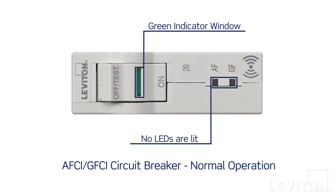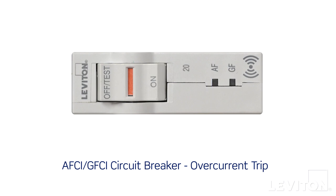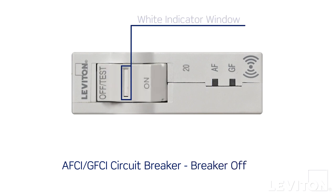If the breaker is experiencing an overcurrent trip, the indicator window turns red. As long as there's no arc or ground fault present, no LEDs will light. And if the breaker is off, the indicator window in the rocker handle will display as white and no LEDs will be lit.